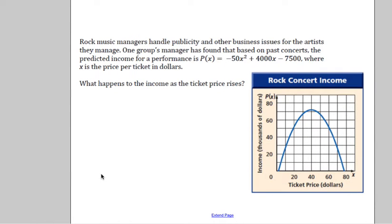Let's look at a real-world problem right away that uses a quadratic. Rock music managers handle publicity and other business issues for the artists they manage. One group's manager has found that based on past concerts, the predicted income for a performance is p(x) = -50x² + 4,000x - 7,500, where x is the predicted price per ticket in dollars. We want to know what happens to the income as the ticket price rises.